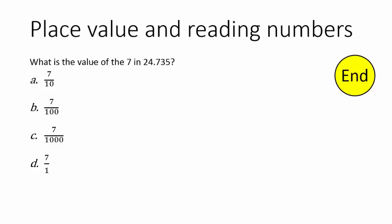We want to know what is the value of the 7 in this number, 24.735. Here's the 7 — what's the actual value? Well, this is the tenths place, so we're actually saying this is 7 tenths. So as clearly as I can make it, that is 7 tenths of a whole number, or 7 tenths of 1.